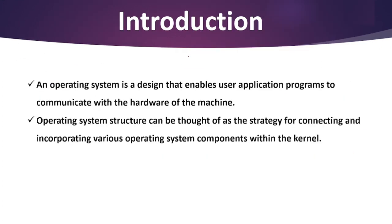An operating system is nothing but an interface that helps a computer user to communicate with the computer hardware. Without a proper operating system, a user cannot communicate or share data files with the computer hardware. So an operating system can be implemented with the help of various structures, and the structure of the operating system depends mainly on how the various common components of the operating system are interconnected and melded into the kernel.